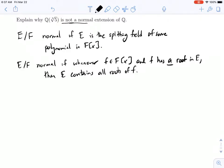That means that if we want to show something is not normal, we only need to find a single example of a polynomial that has a root in E but which does not have all of its roots in E.